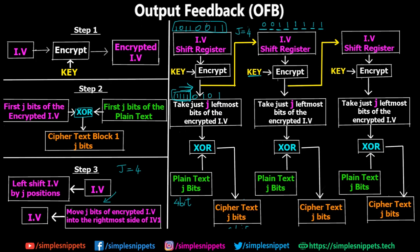These three steps happen at every iteration. The IV changes at every iteration — it was 1 0 1 1 0 0 1 1 initially, then becomes something different — because we are shifting the IV by j places each time. This makes the encryption more powerful and random, and harder to decrypt. The key difference from cipher feedback: in OFB the encrypted IV itself is shifted into the next iteration, whereas in cipher feedback we took the cipher text from the previous step and fed j bits of that cipher text into the IV.